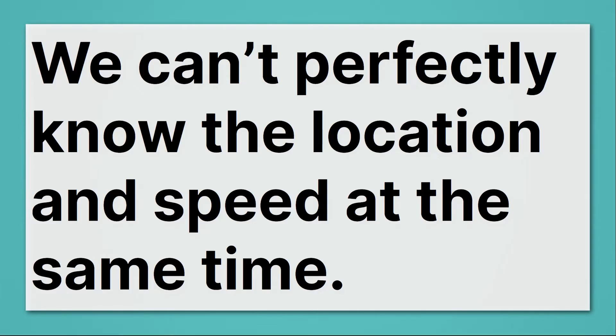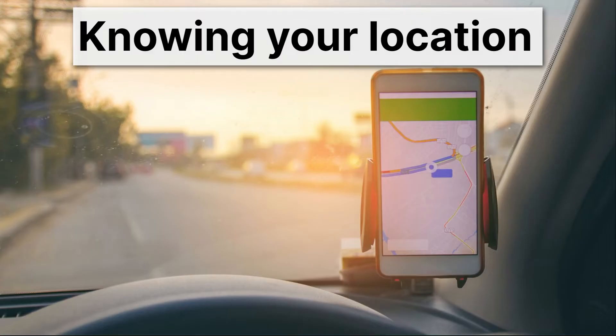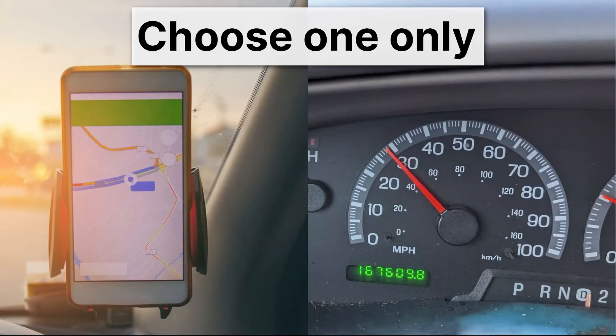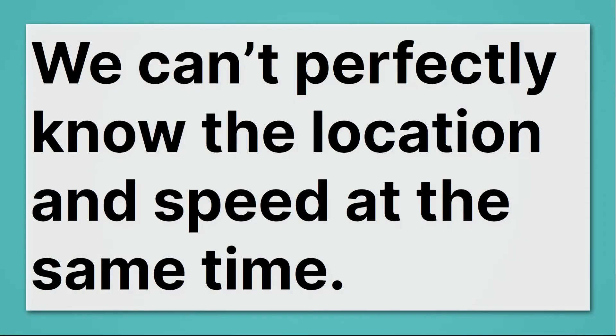Well, let's think about it in terms of an analogy with your car. You can know your location in your car. You do that with your GPS. And you can know your speed. We do that with the speedometer. And of course, we can just know both of those. That's no problem. But in the quantum world, we only get to choose one. We can use our GPS, or we can use our speedometer, but we can't use both of them at the same time and know exactly where we are and exactly how fast we're going. That's pretty crazy. So we can't perfectly know the location and speed at the same time.